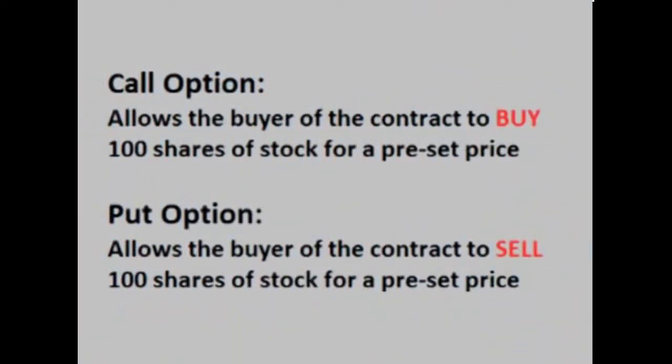So what is an option? An option is a contract that one buys that locks in a buy price or a sell price on a particular stock for a set amount of time. There are two types. One type, which is called a call option, gives the contract holder the right to buy a stock for a predetermined set price within a set time period. The other type, which is called a put option, gives the contract holder the right to sell a stock for a predetermined set price within a set time period.